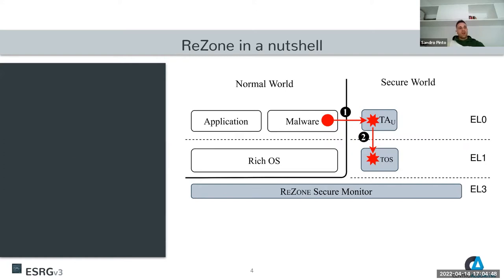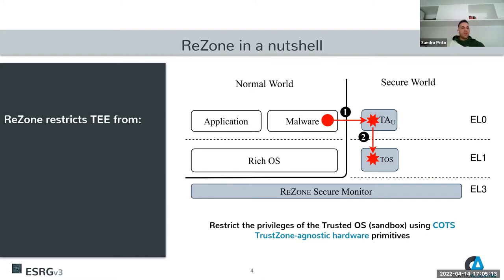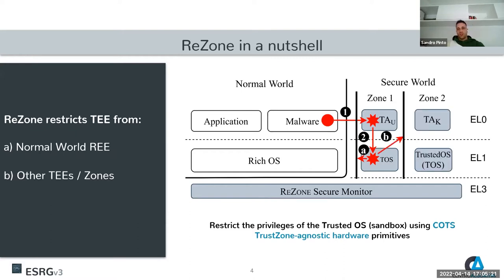With our work, we tried to address this problem and fix this excess level of privilege of the TEE in the overall TrustZone architecture. For that, we proposed ReZone. ReZone leverages TrustZone-agnostic hardware primitives available in commercial off-the-shelf platforms to partition a monolithic trusted environment into multiple zones. By doing that, ReZone is able to restrict a TEE from accessing the normal world, accessing other TEEs or zones, and even restricting access to the secure monitor.